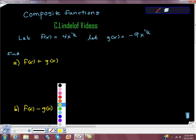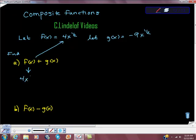All I'm going to do is fill in the blanks. f of x is that value, so I'm going to take 4x to the 1 half power. This plus sign is this one because it asked me to add them. And then g of x is this value, so I'm just going to add that value, negative 9x to the 1 half power.